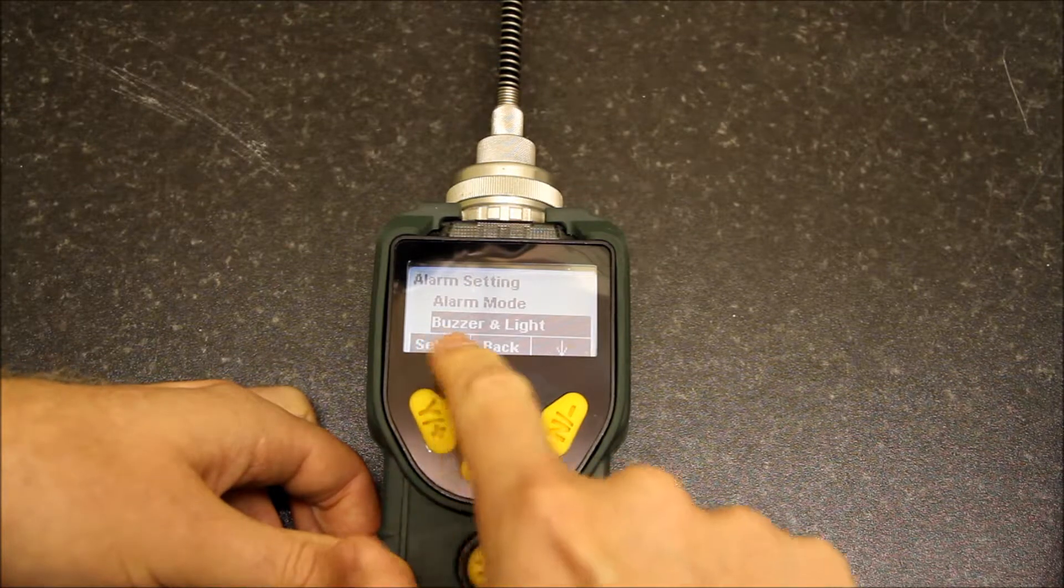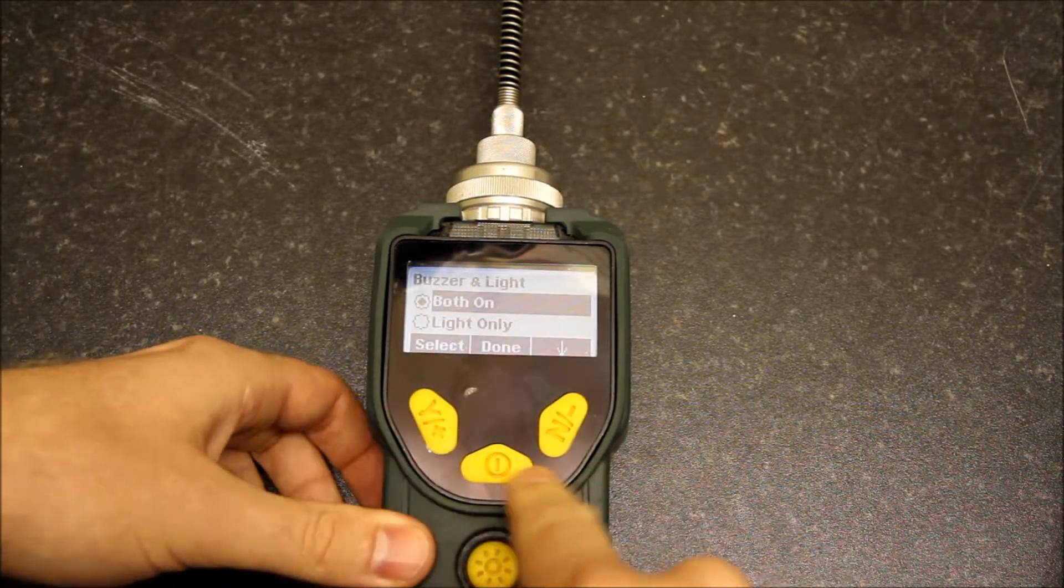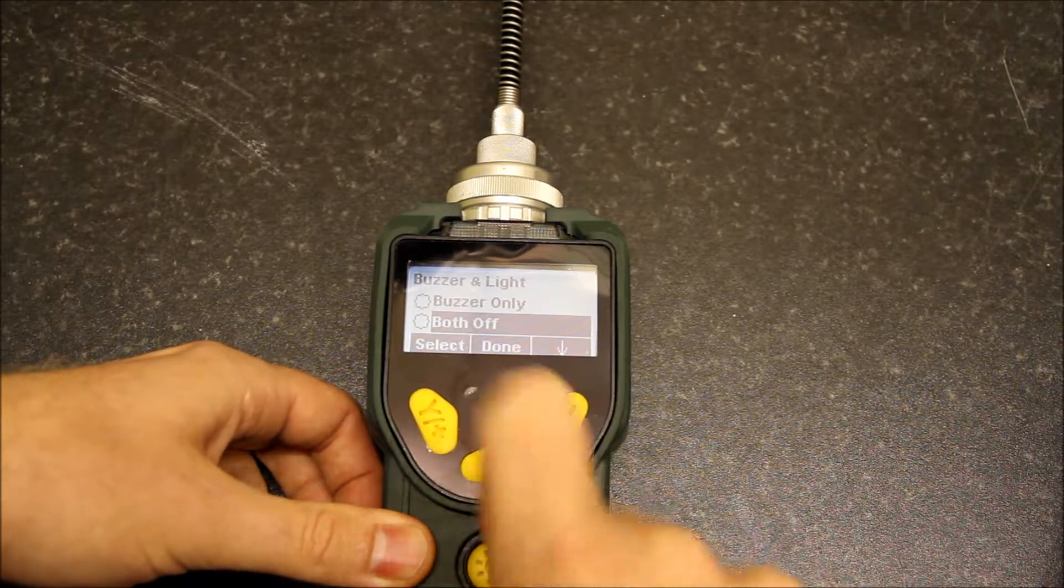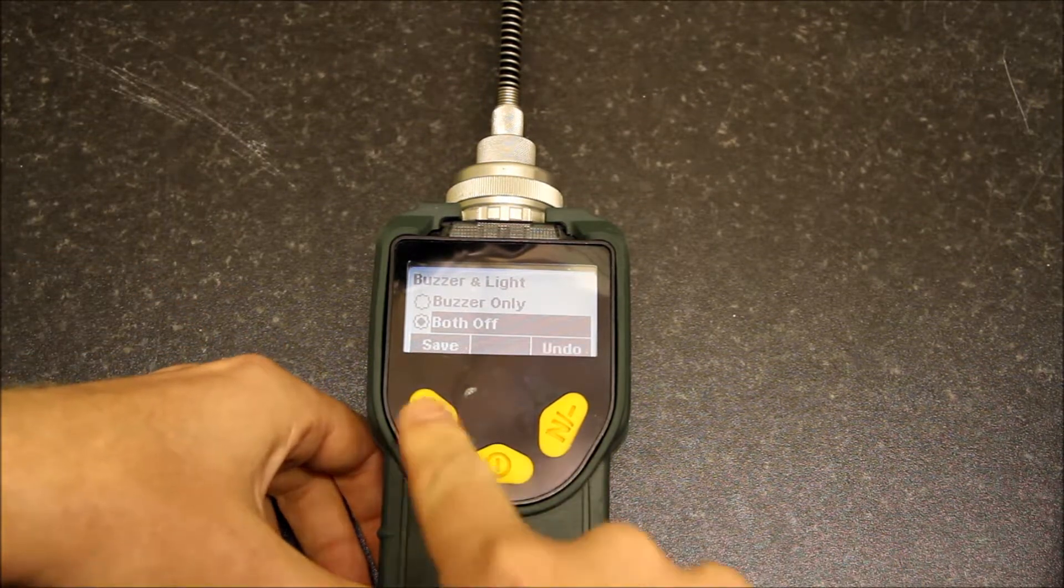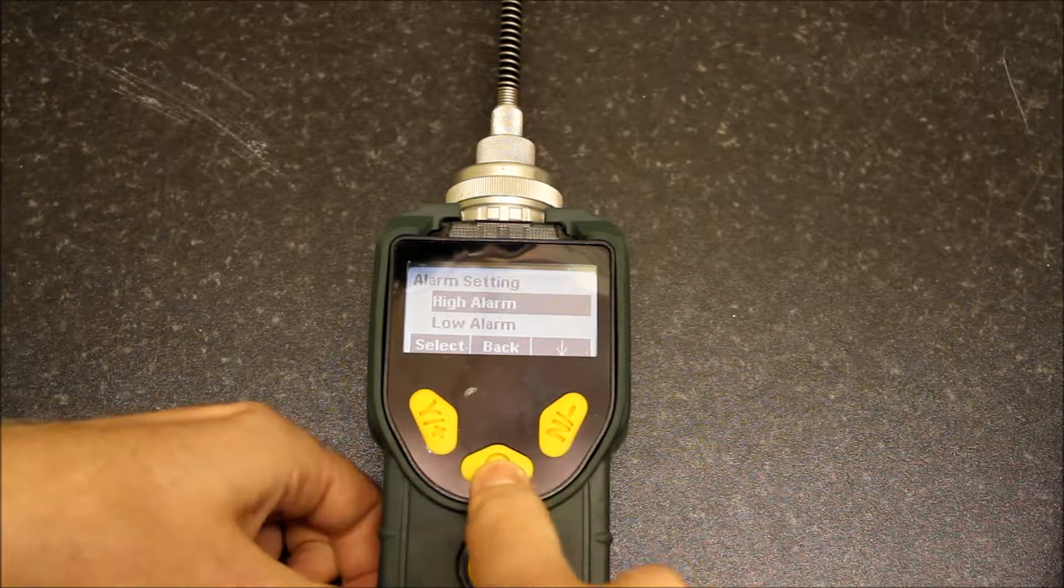Under alarm settings you've also got buzzer and light. If we select this you have both on, light only, buzzer only, or both off. If we put both off and press done to save, the unit will now no longer have any alarms on it whatsoever.